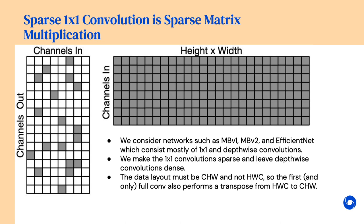We do this by replacing the one-by-one convolutions common in mobile architectures with sparse matrix multiplies. We can take advantage of the dense right-hand side of this multiply to still do vector loads and stores, and we can also take advantage of the small number of channels in these models to use the L1 cache to mitigate the random memory access caused by the sparsity pattern.